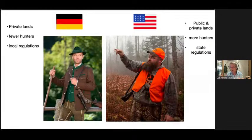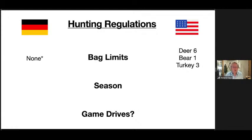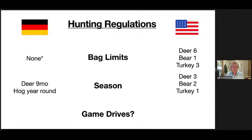The regulations are quite different. In North Carolina you can hunt six deer, one bear, and three turkey per year. Germany has no fixed bag limits, set locally, but they certainly hunt a lot more animals. The season for deer in NC is about three months; in Germany it's nine months. Hogs are hunted year-round in Germany. Game drives with dogs and horns are allowed in Germany — organized efforts to push all the deer out of a forest — which is less common in the US.